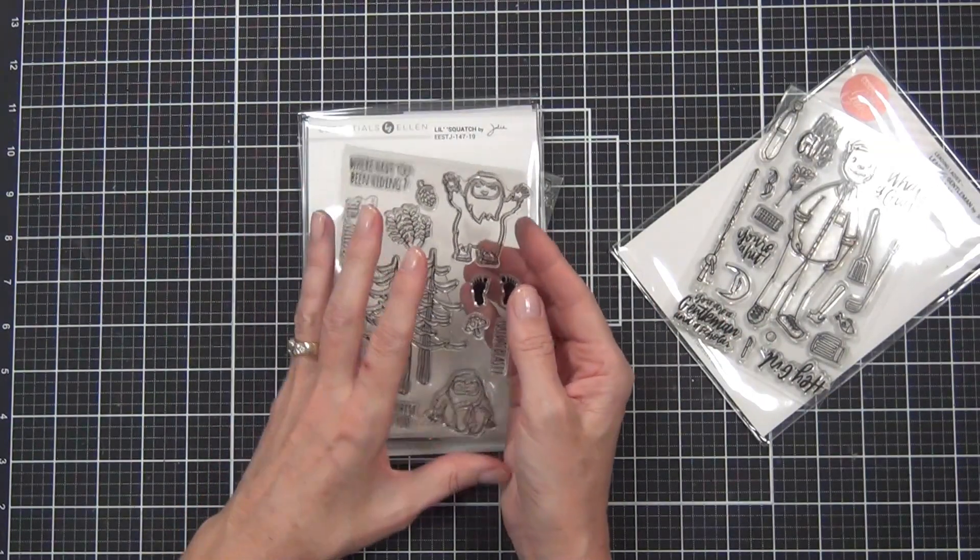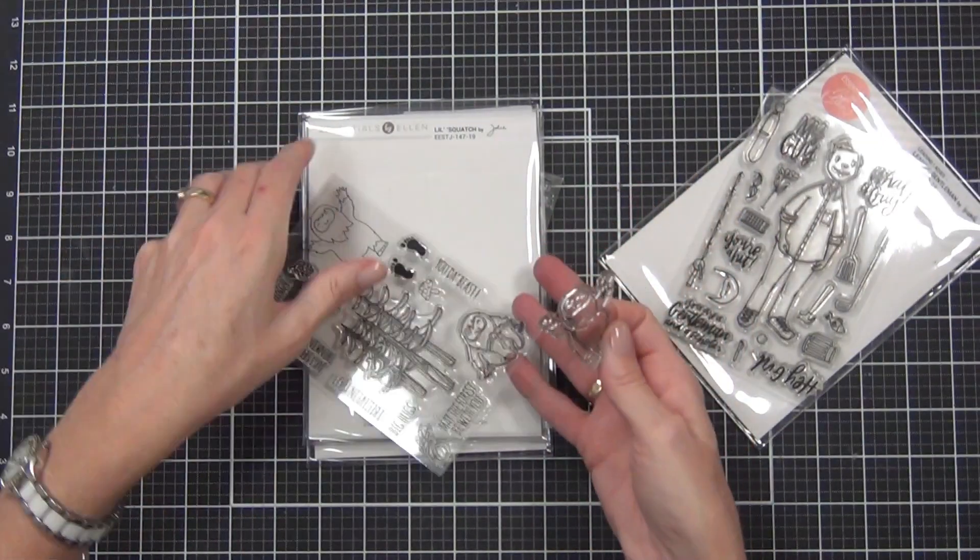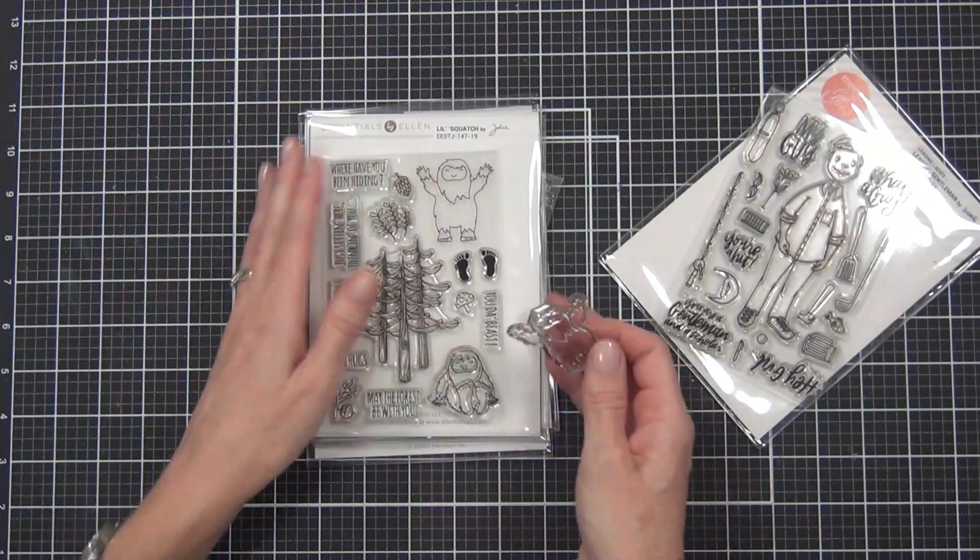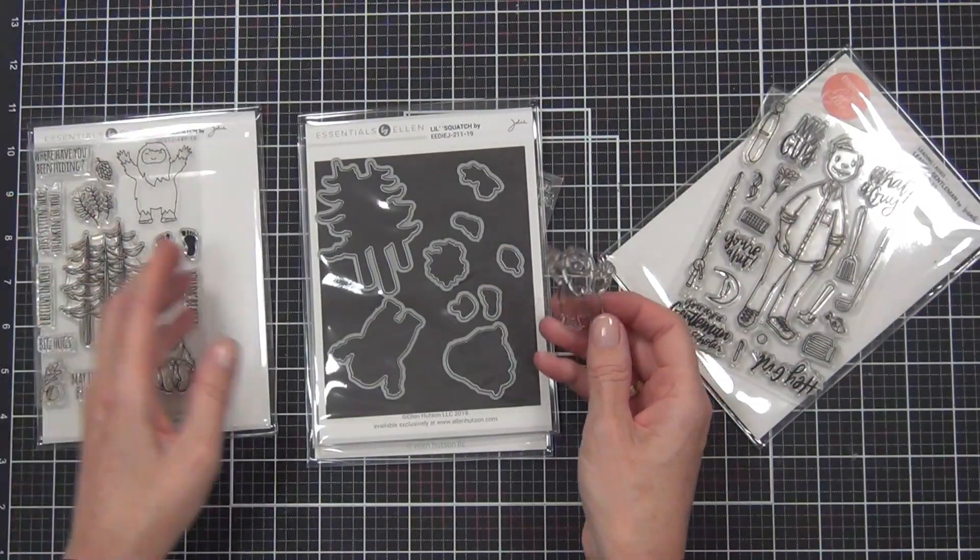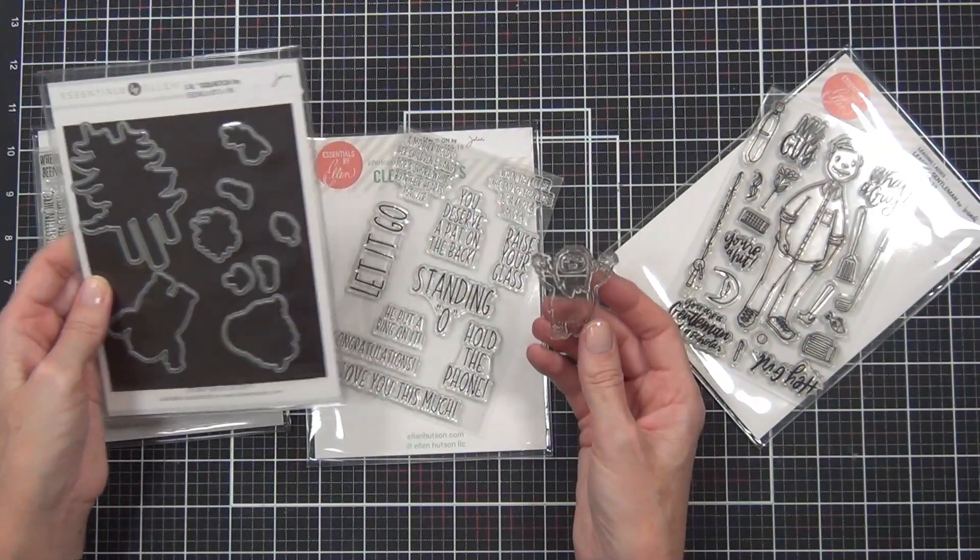I've grabbed the Leading Gentlemen set because it had the beer mug in it, and then I've got one of the little Squatch sets and the coordinating dies.